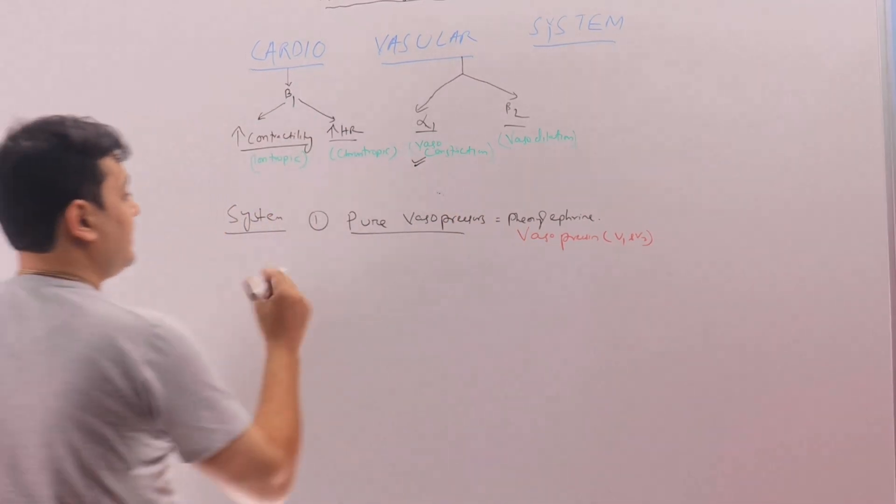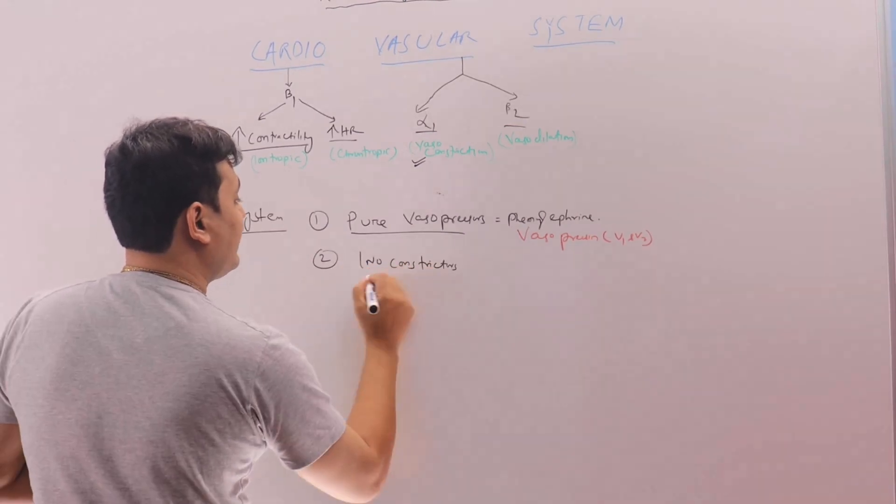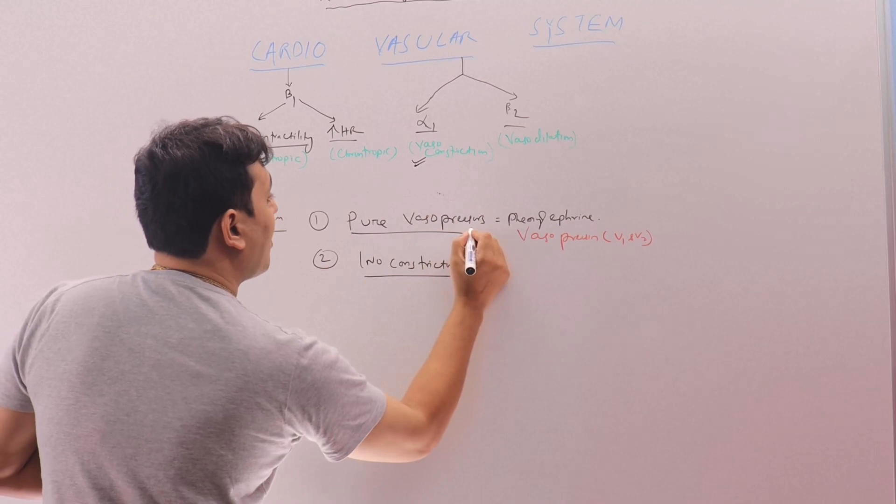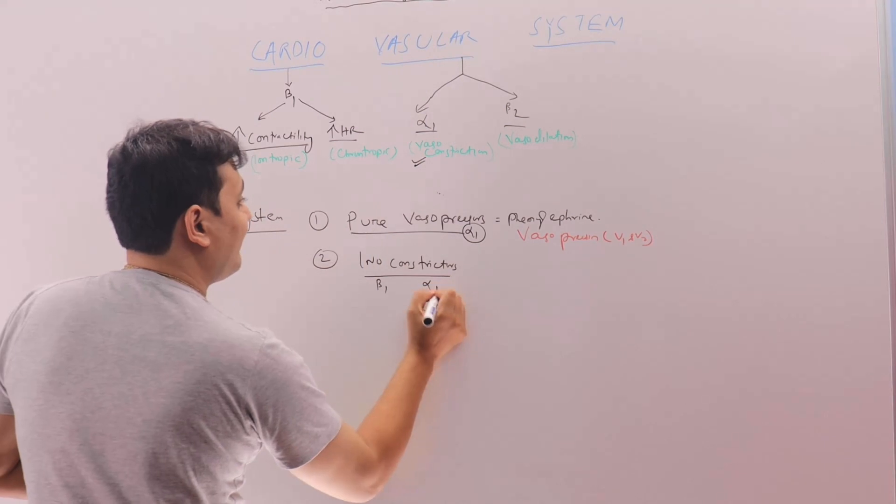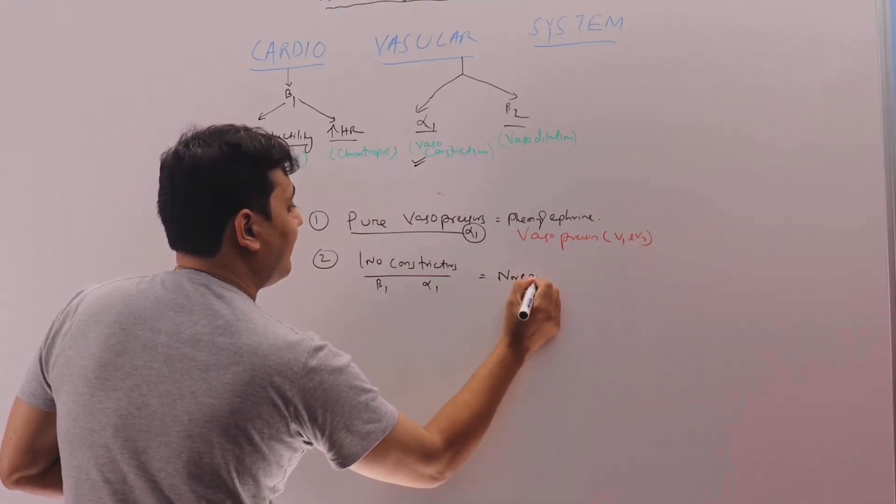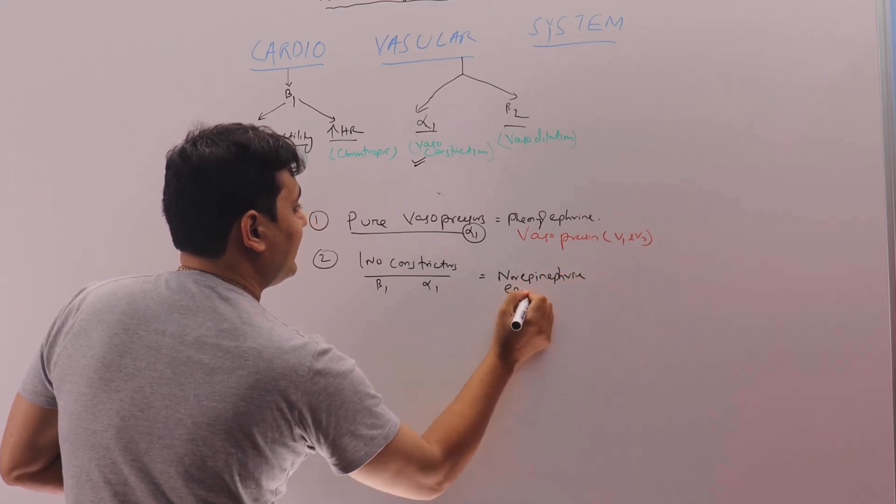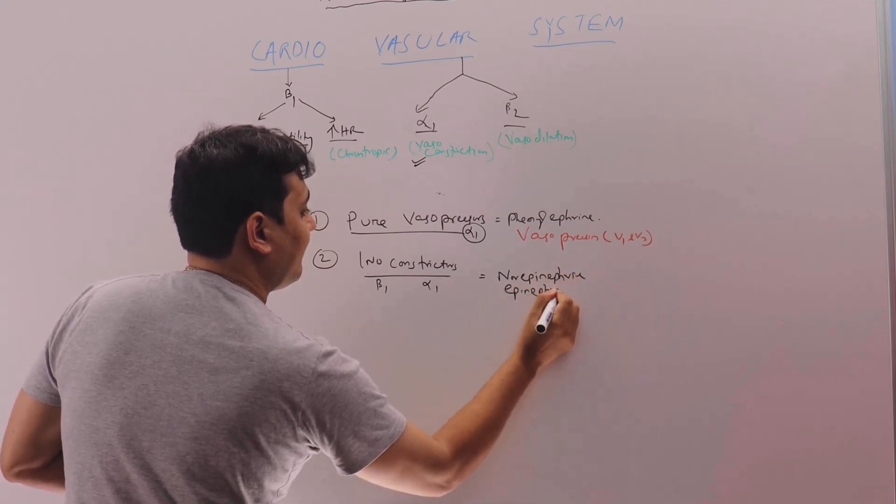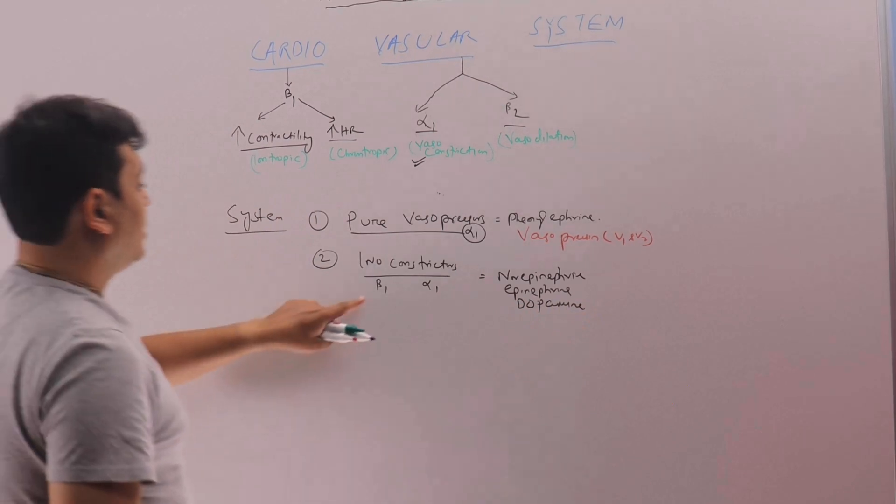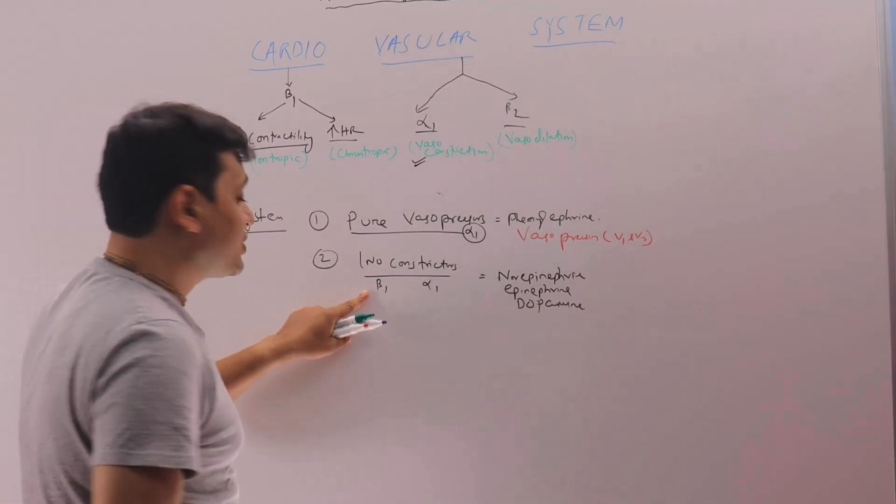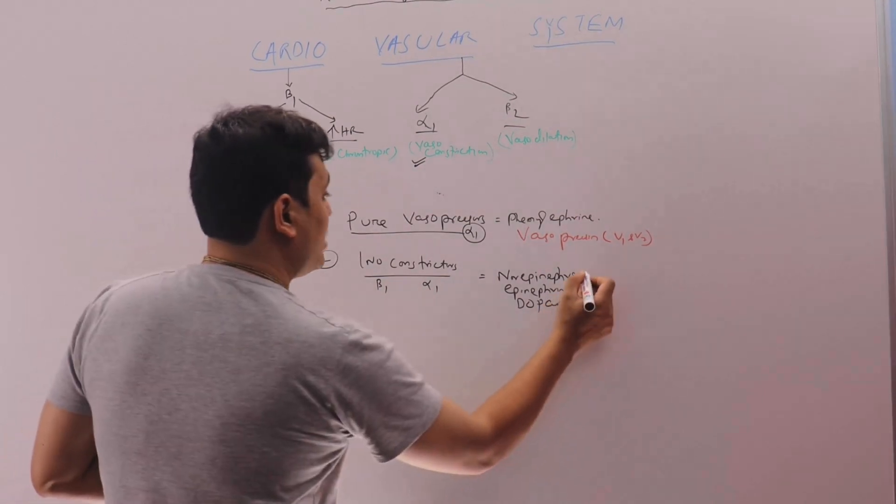Then second is inoconstrictors. The pure vasopressor is alpha 1 agonist. Ino is beta 1 and alpha 1. And we have norepinephrine, epinephrine and dopamine. So what they will do is, they will make the heart beat faster and harder and they will clamp the blood vessels. So these are the inoconstrictors.